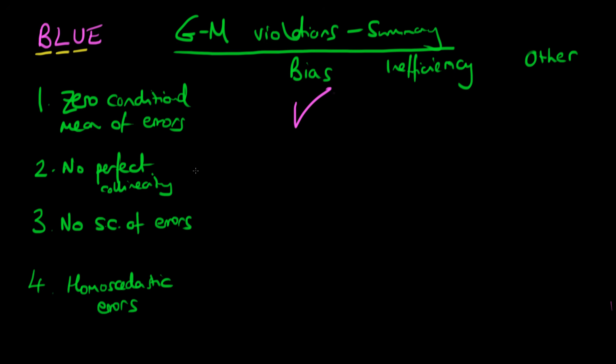Now thinking about the assumption of no perfect collinearity in your model. Well, this is slightly different to the other Gauss-Markov assumptions in the sense that if we do have perfect collinearity amongst regressors, then it actually means that we can't even estimate our regression equation.